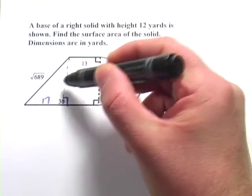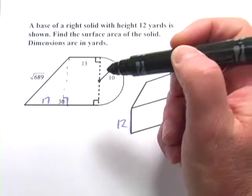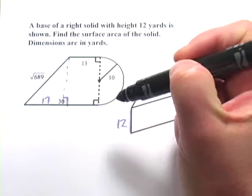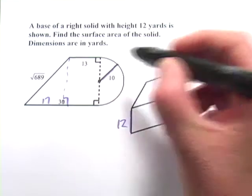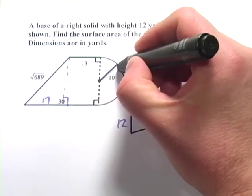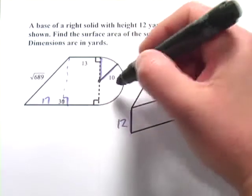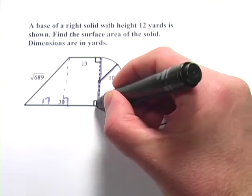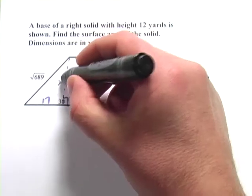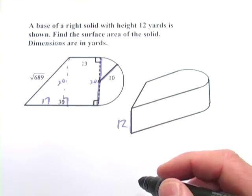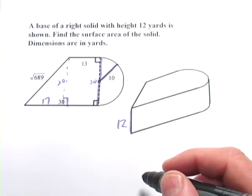I could punch in 17 squared plus b squared equals 689 and figure that out. But before I go to that work, I notice over here I've got a radius of this circle. And that means if this is 10, that means this is 10 too because that's a radius. And this is 10 as well, so this is 20. If that's the case, then this is 20.